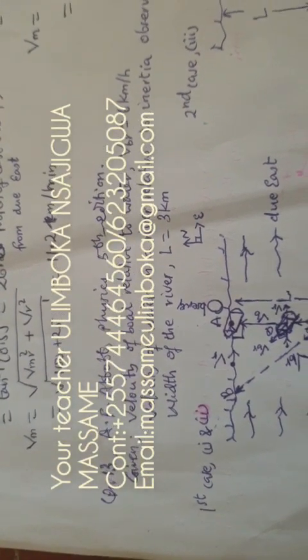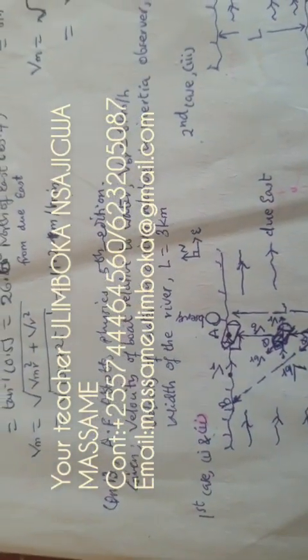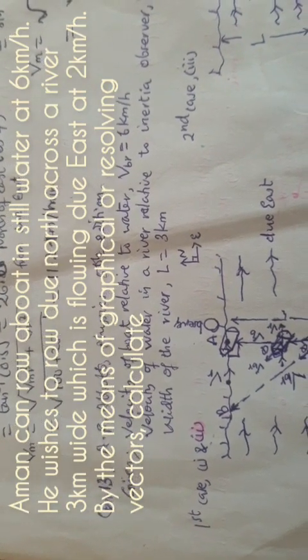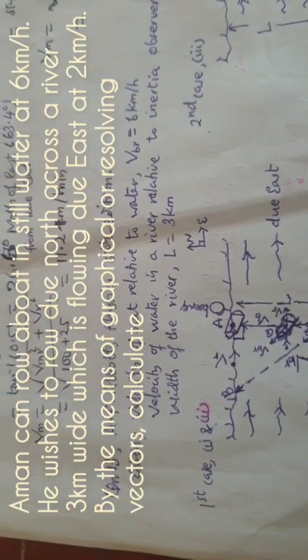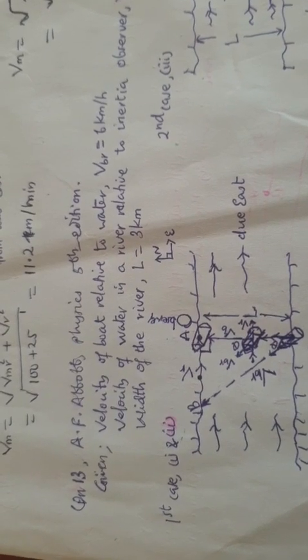Hi, I'm your teacher. Let us solve the questions from AF About Physics, 5th edition, question number 13. This question involves the problem of a ferryman who wants to cross through a flowing river from one bank to another bank. This question is easily solved by only understanding first the intention of the ferryman.